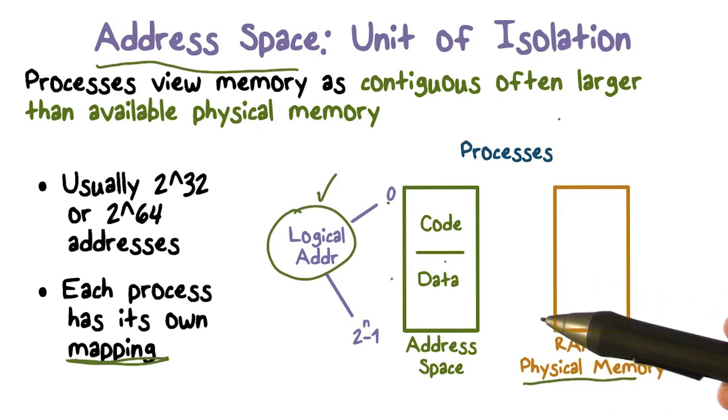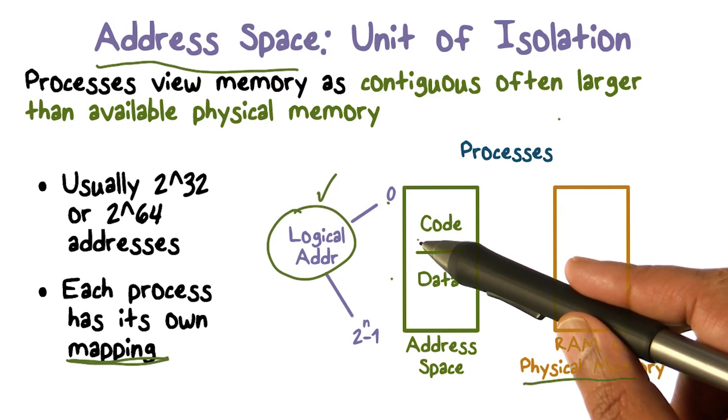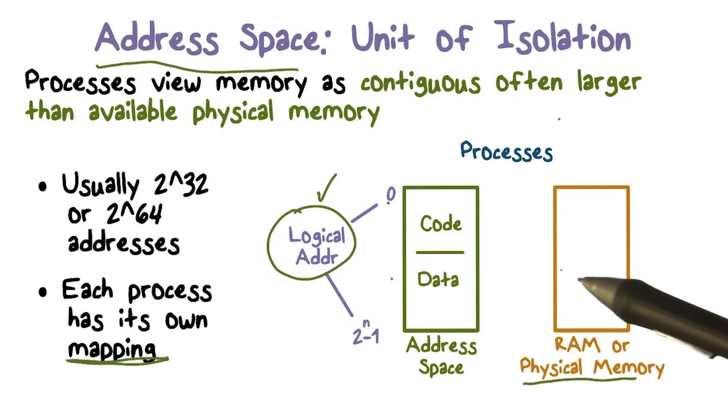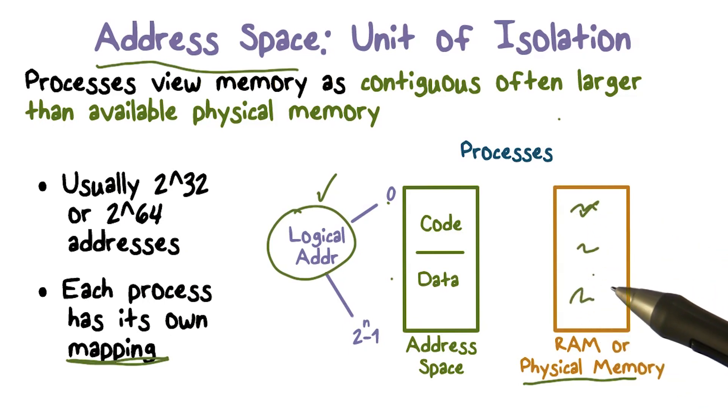So you generate a logical address, you say I want to access logical location 2000. We have to say, well, that currently lives somewhere in this physical memory that we have here. So this code and data eventually has to be placed in different places in the memory that we have.